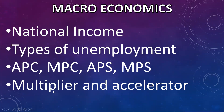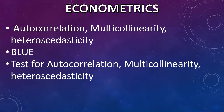Next is econometrics. Major questions will come from the definitions of autocorrelation, multicollinearity, and heteroscedasticity. Last year, all three definitions were asked — autocorrelation as a direct question, multicollinearity somewhat differently, and heteroscedasticity as 'what will happen if the assumption of homoscedasticity is not followed.' Please check the definitions of these three concepts. Also, BLUE — Best Linear Unbiased and Efficient — what are these four assumptions? Then which tests are used for autocorrelation, multicollinearity, and heteroscedasticity — for example, for autocorrelation we have the Durbin-Watson test. Look at which tests correspond to which concepts.